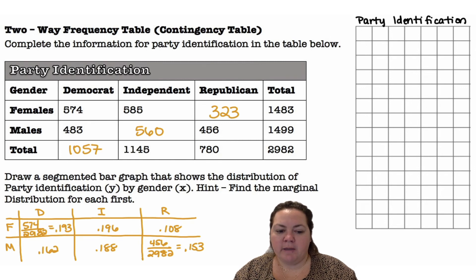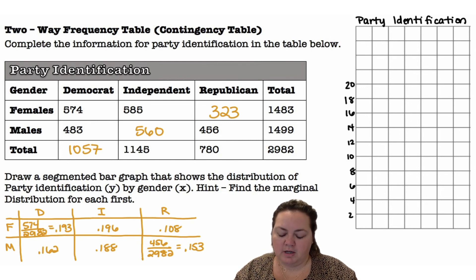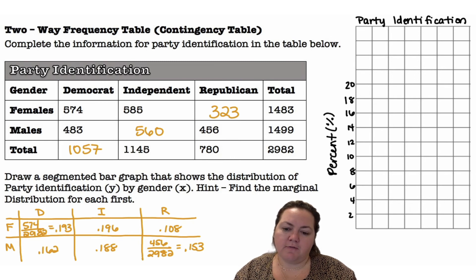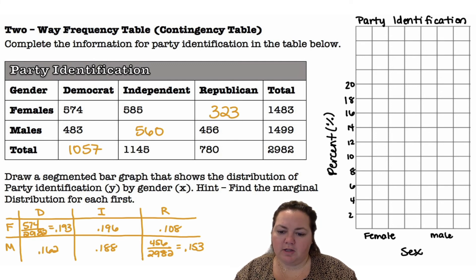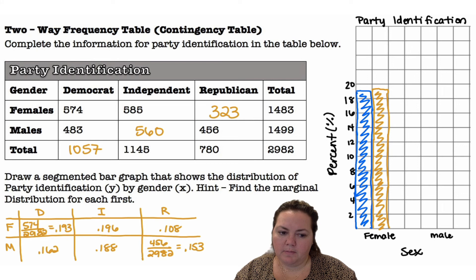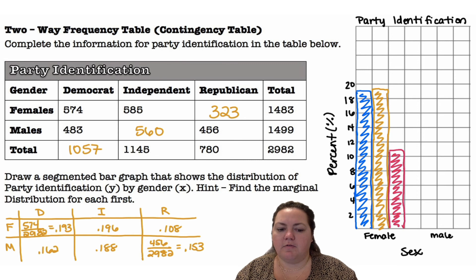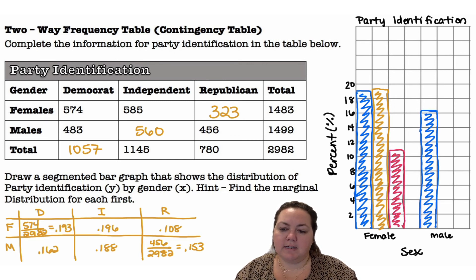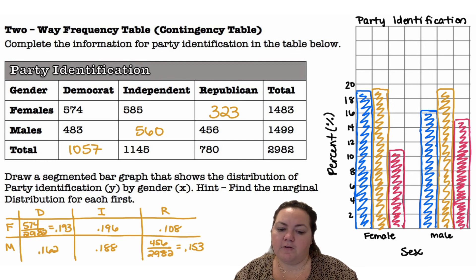I'll put a title on my segmented bar graph — party identification — with frequencies on the side, counting by 2, shown as relative frequency (percent). For sex I have male and female, and the categories are Democrat, Independent, and Republican. For female: 19.3 percent Democrat, 19.6 percent Independent, and 10.8 percent Republican. For male: 16.2 percent Democrat, 18.8 percent Independent, and 15.3 percent Republican.